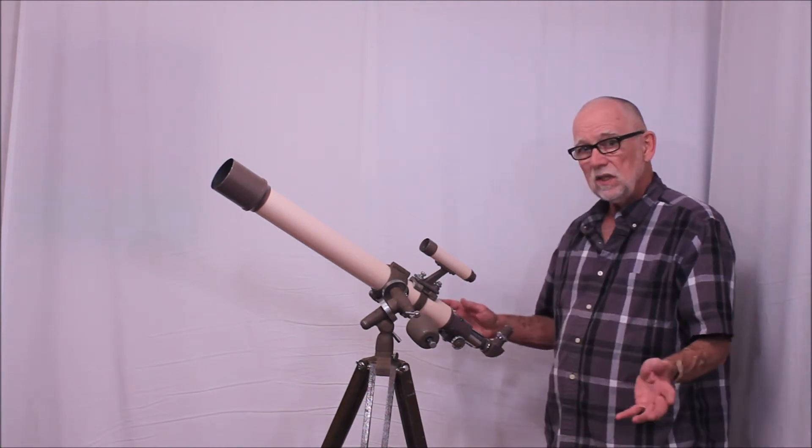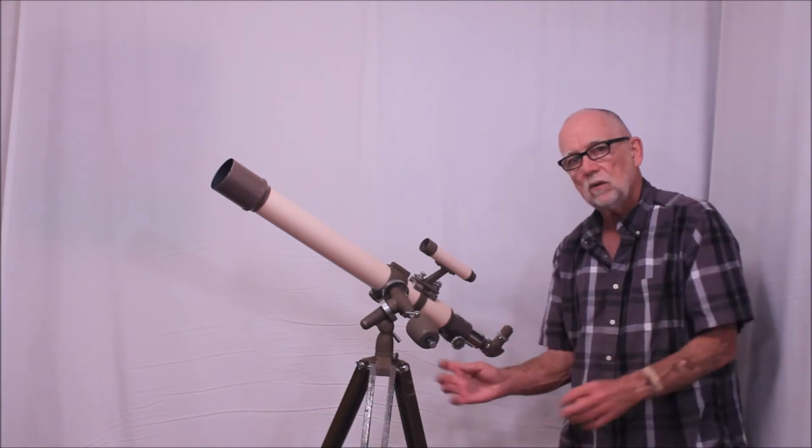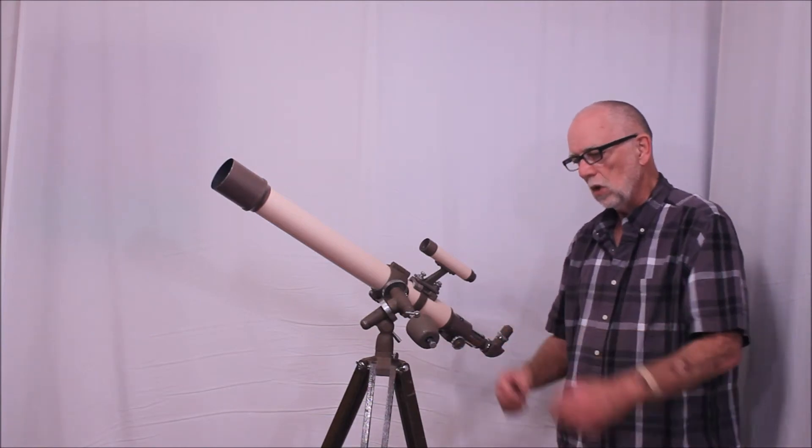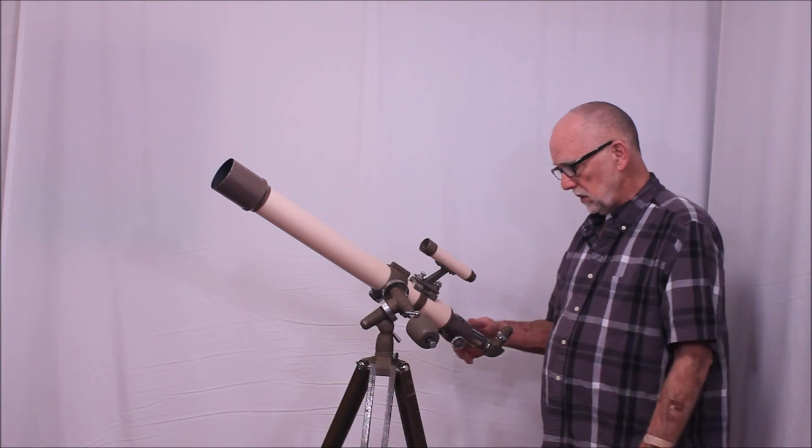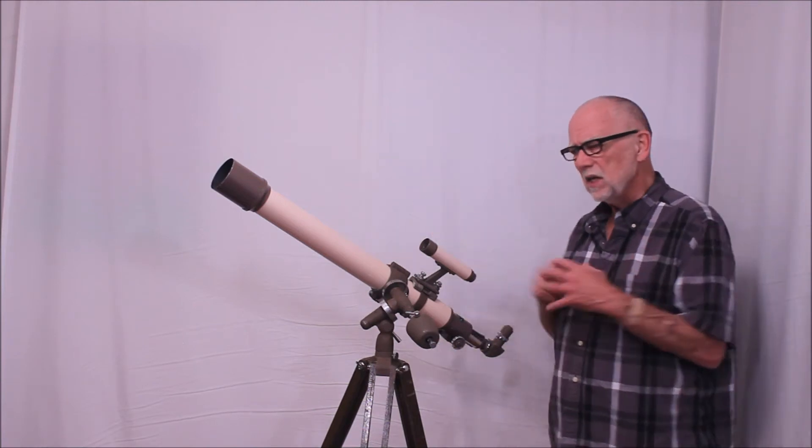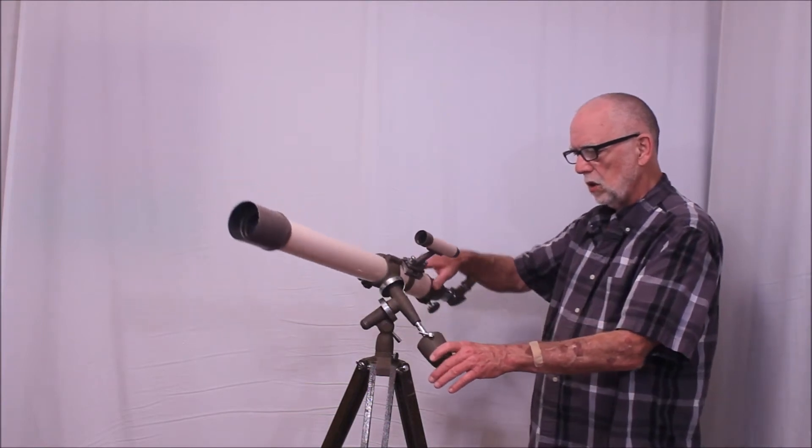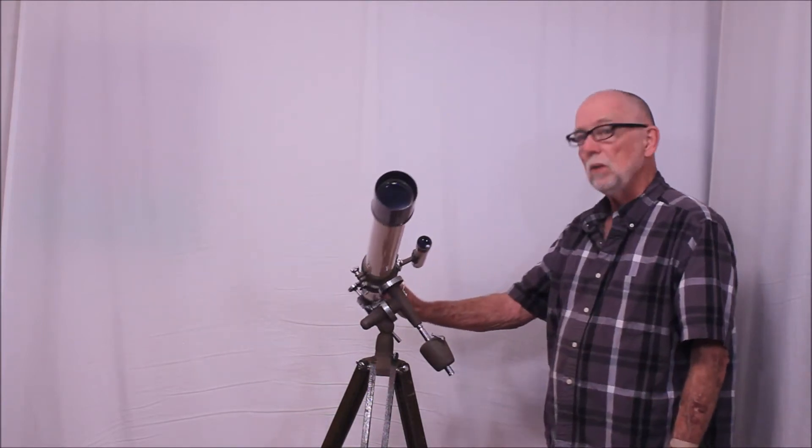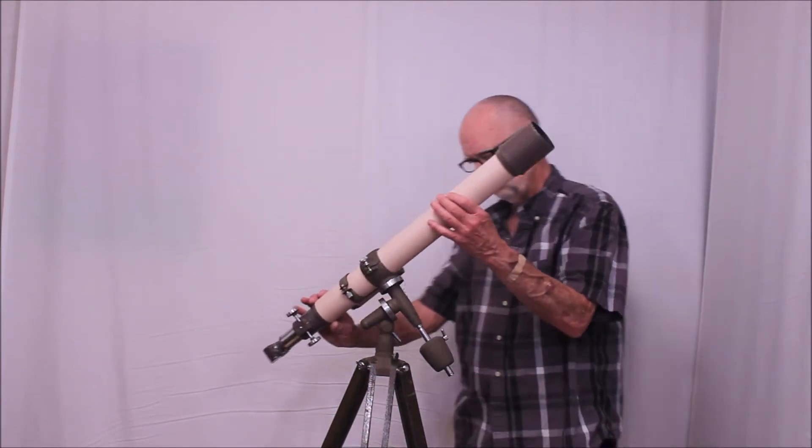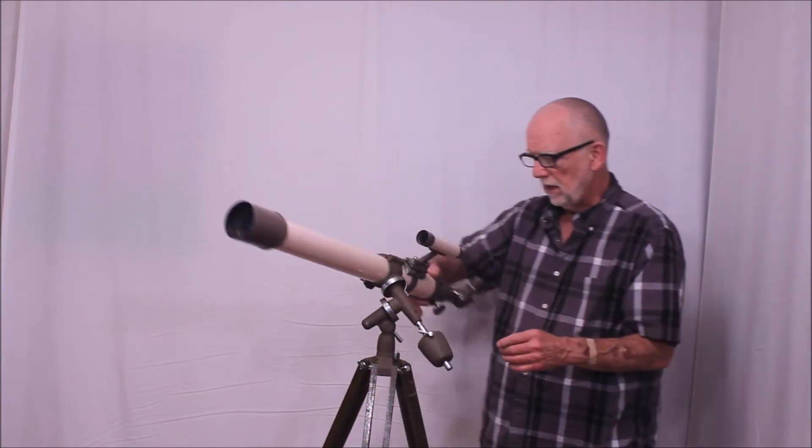And the convenience of not having to fumble around and look for the slow motion knobs is actually pretty darn nice. It's a nice trade off. It's a nice compromise. And it made the telescope a little bit simpler to use. So that's how that works.